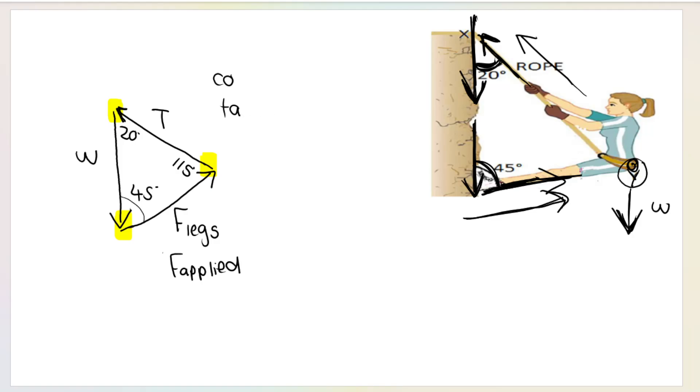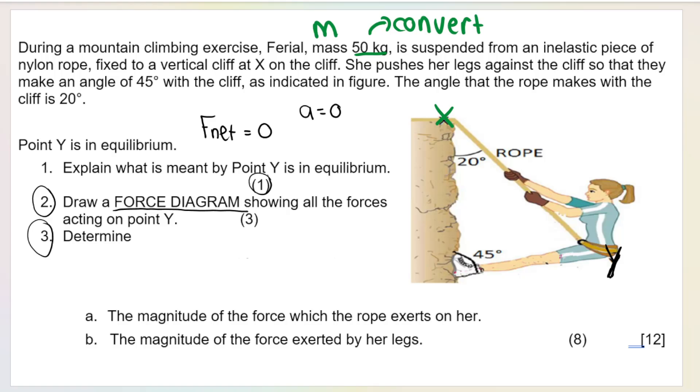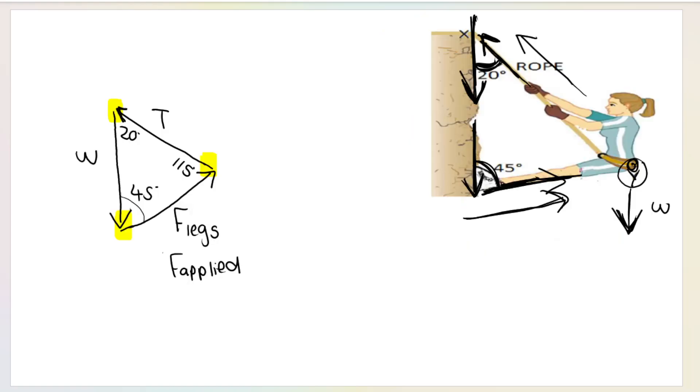Unfortunately, what that means is we can't just use our normal trig ratios. The next question asks to determine the magnitude of the force which the rope exerts on her - the tension force. And in part B, the magnitude of the force exerted by her legs. If you have a triangle of forces, whether it's a 90 degree triangle or not, you need to know at least one of these three vectors. We're looking for tension and force applied.